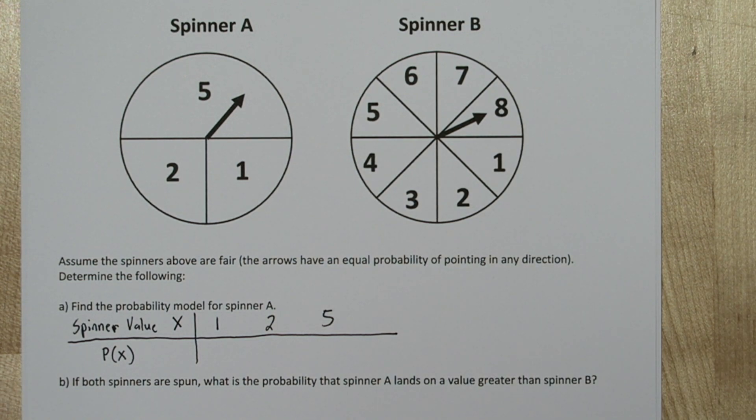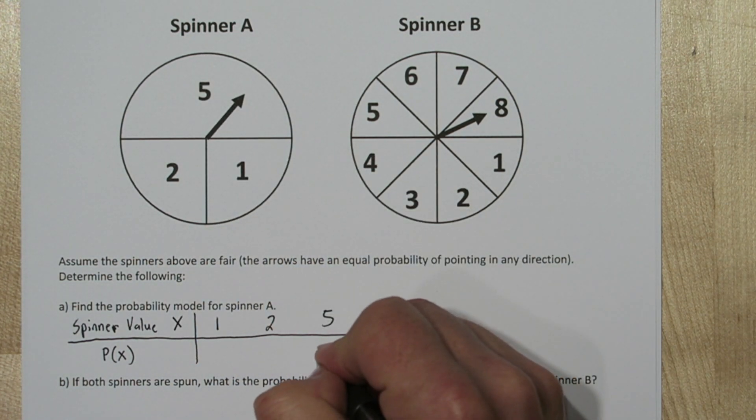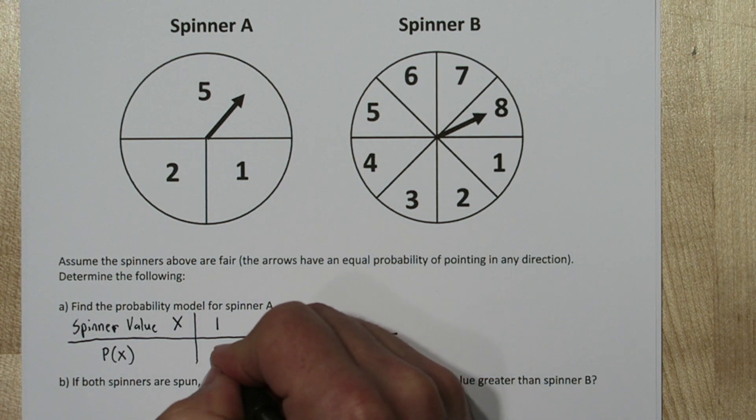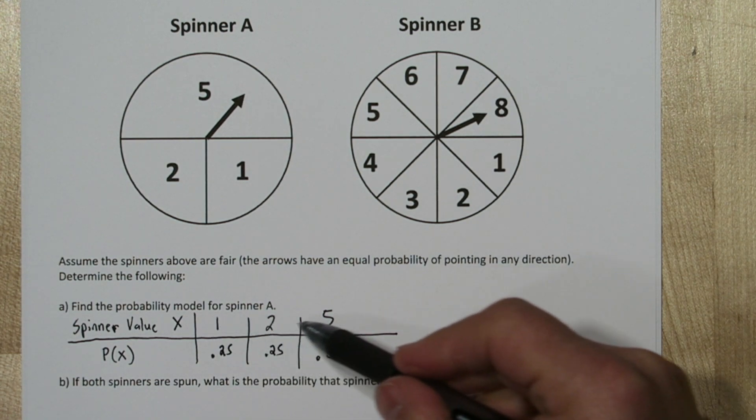The next thing the probability model tells you is the probability of all the outcomes. So since the 5 represents half the area, its probability must be 0.5, and these other two are a quarter of the area, so their probabilities are 0.25. Since all the outcomes for spinner A are listed, all the probabilities must sum to 1.